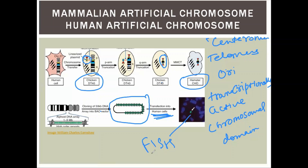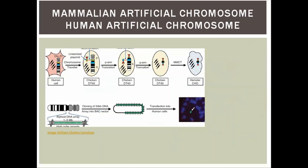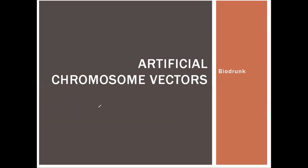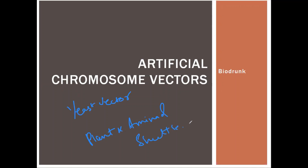So that was all about Artificial Chromosome Vectors. The next video will cover Yeast Vectors, followed by videos on Plant and Animal Vectors, and Shuttle Vectors — and then the entire Recombinant DNA Technology series will be covered.